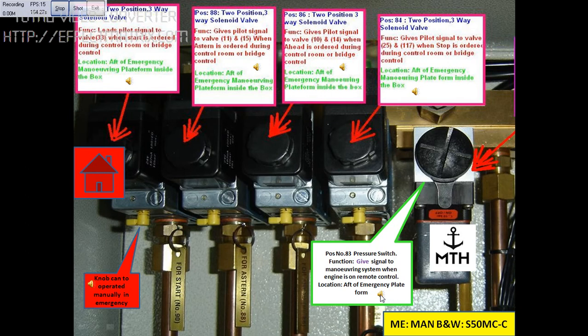This block is position number 83, which is a pressure switch. The function of this switch is to give a signal to the maneuvering system when the engine is on remote control. The location is on the emergency maneuvering platform and it is inside the box.